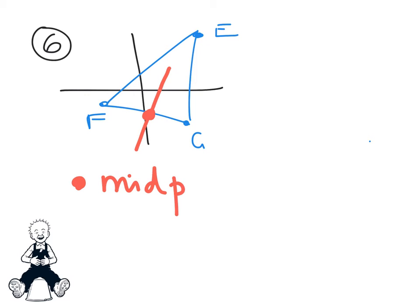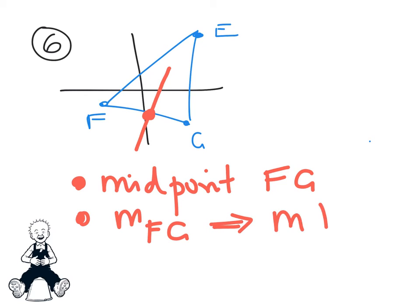First stage is find the midpoint of FG. Second stage is find the gradient of FG, which will then give you the perpendicular gradient. And then use these answers, the perpendicular gradient and the midpoint, in the formula y minus b to get the equation of the red line.